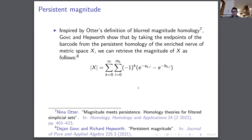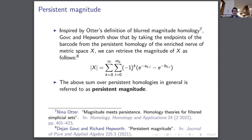Now, what about persistent magnitude? This is inspired by Nina Otter's definition of blurred magnitude homology. Goetz and Hepworth showed that by taking the endpoints of the barcodes from the persistent homology of the Rips nerve of a metric space X, we can retrieve the magnitude through this alternating sum. We take the beginning and end points of each barcode interval, and combine them in a form where we take the alternating sum based on the degree of the homology — minus one to the k for H_k — to get back the magnitude of X.